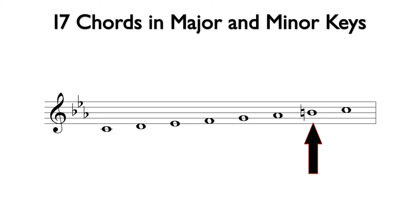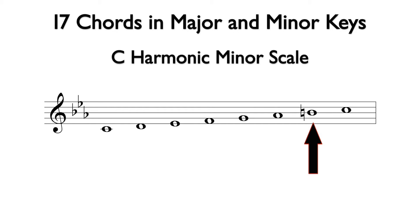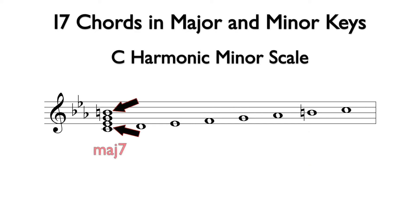If we raise the 7th degree of the natural minor scale, it becomes harmonic minor. In the key of C minor, the Bb becomes B natural. This raises the 7th of the C minor 7 chord, making the interval from the root to the 7th a major 7. This is a C minor major 7 chord.